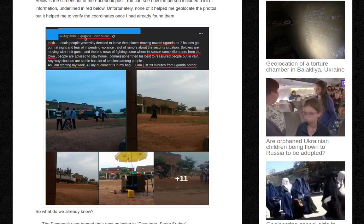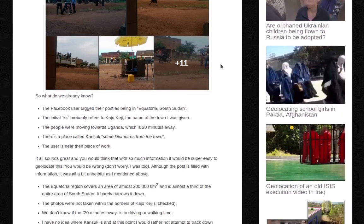So you can see I have underlined: Equatoria, South Sudan, KK, moving towards Uganda, Kansuk, some kilometers from the town, and 'I'm just 20 minutes from the Uganda border.' So what do we already know?